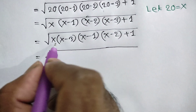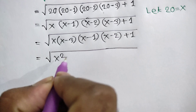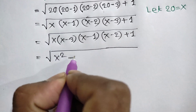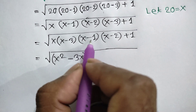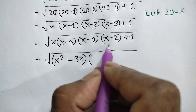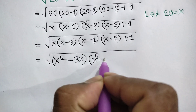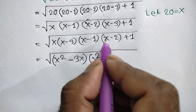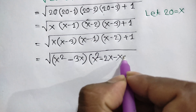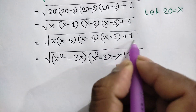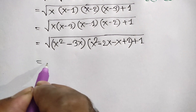Multiplying x and (x minus 3) gives x squared minus 3x. Multiplying (x minus 1) and (x minus 2) gives x squared minus 2x minus x plus 2, which is x squared minus 3x plus 2. So we have (x squared minus 3x) times (x squared minus 3x plus 2) plus 1.